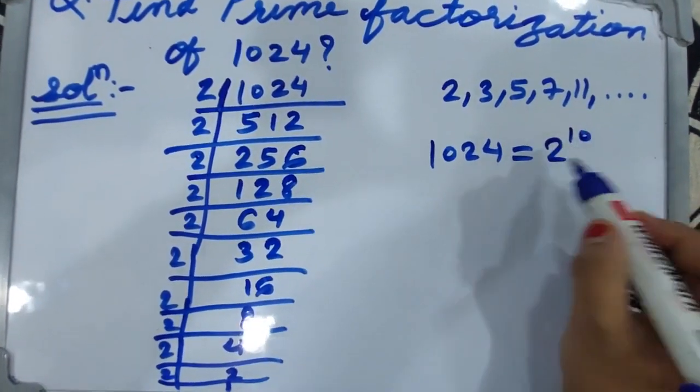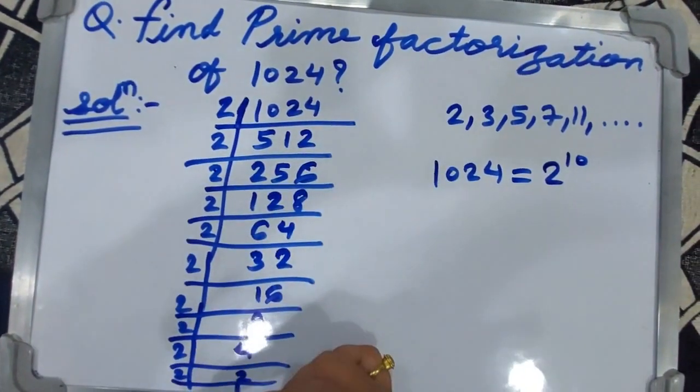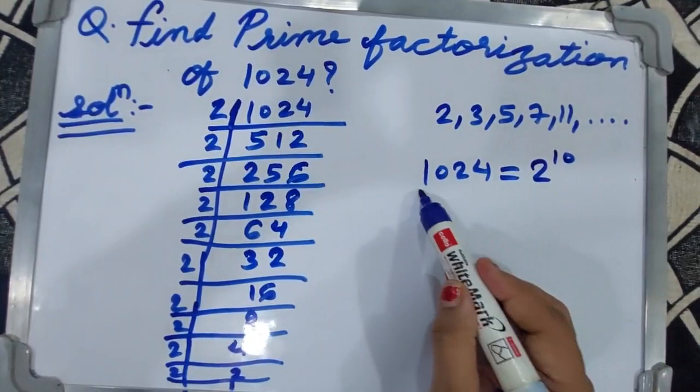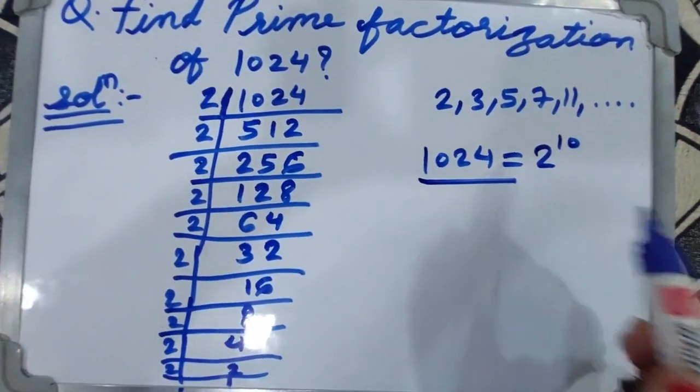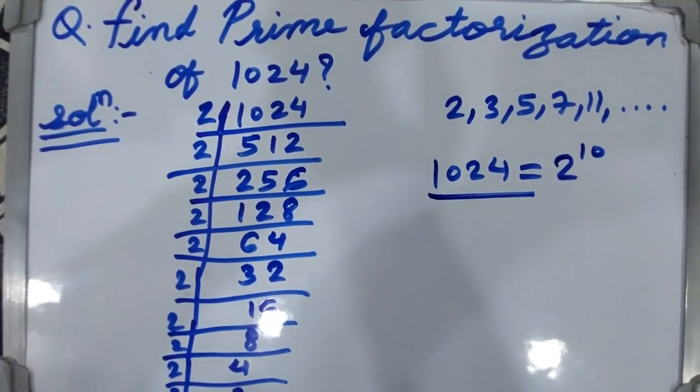This is the answer. When you multiply all these twos together, then the answer will be 1024. 1024 = 2^10. Thanks for watching, please like, share and subscribe my channel. Thank you.